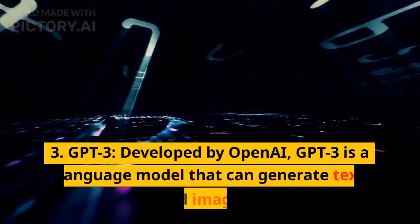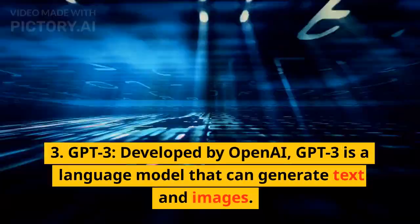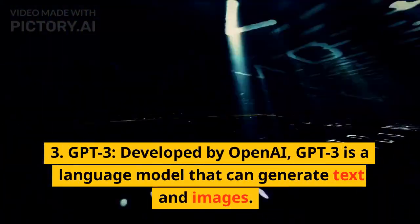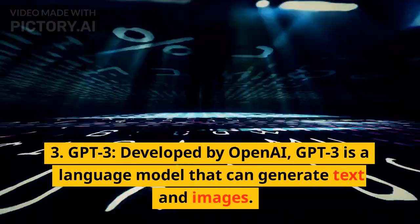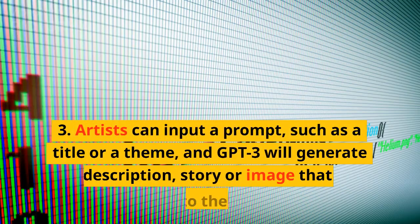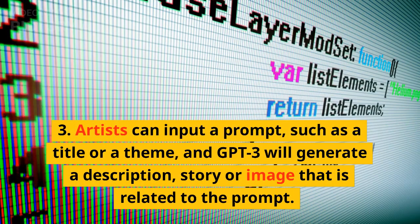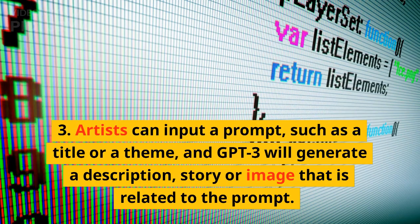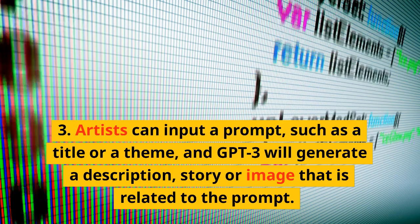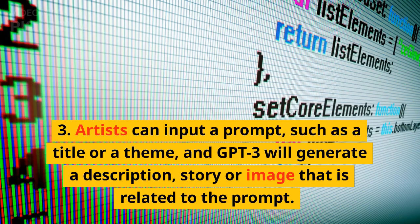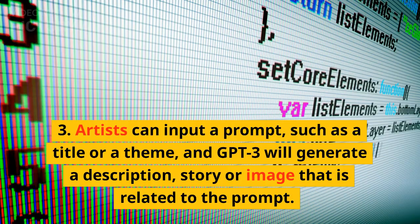GPT-3, also developed by OpenAI, is a language model that can generate text and images. Artists can input a prompt, such as a title or a theme, and GPT-3 will generate a description, story, or image that is related to the prompt.